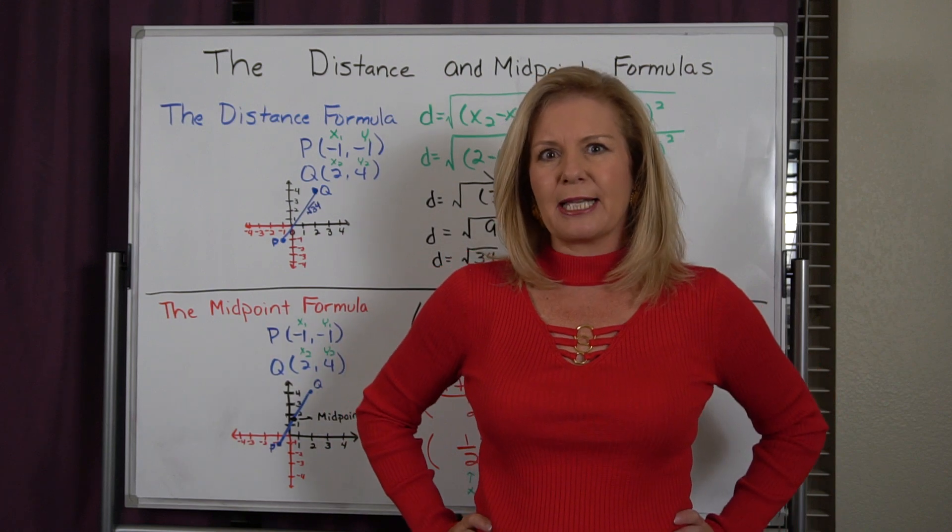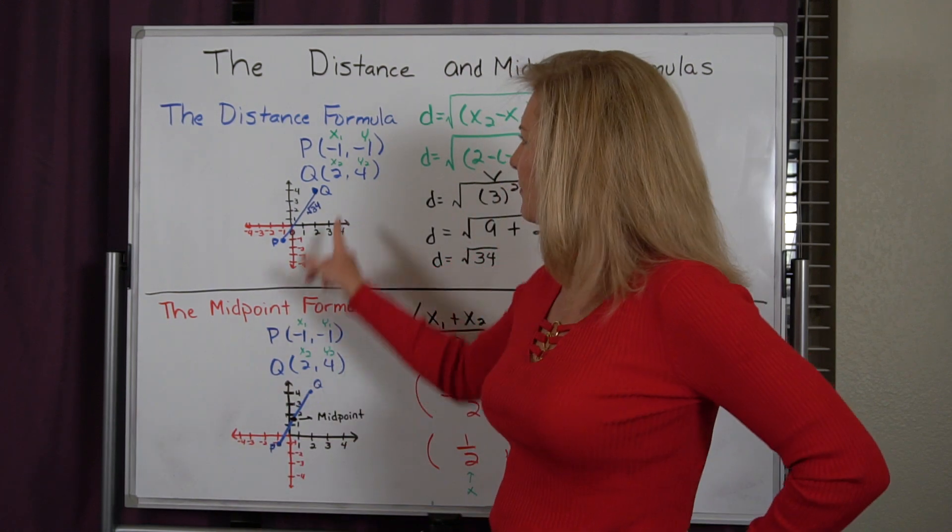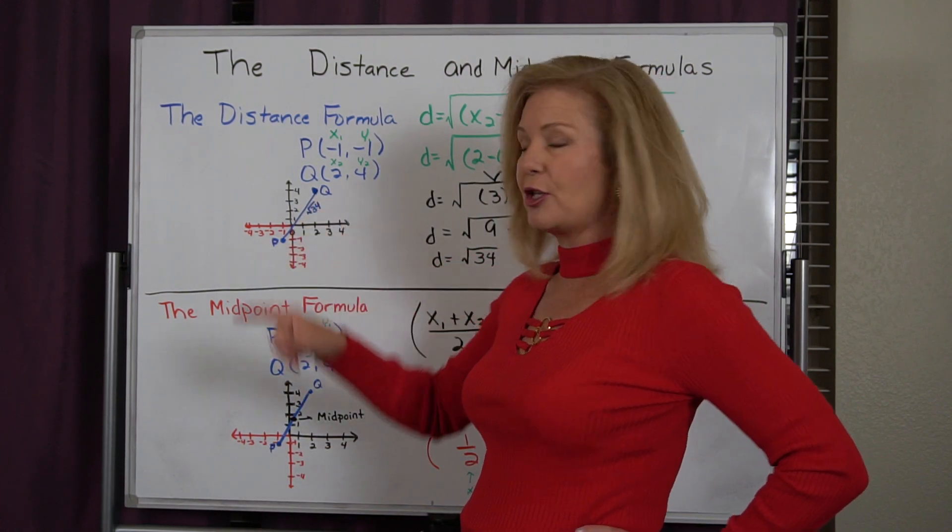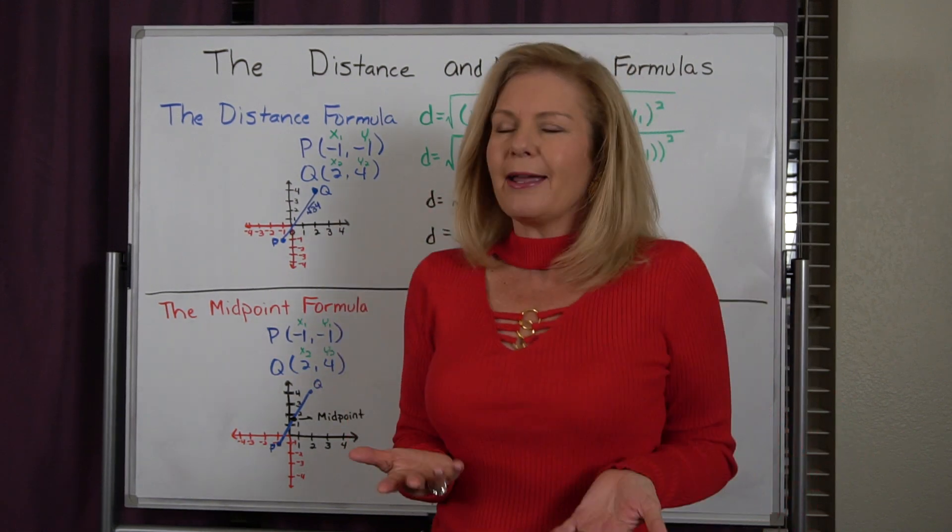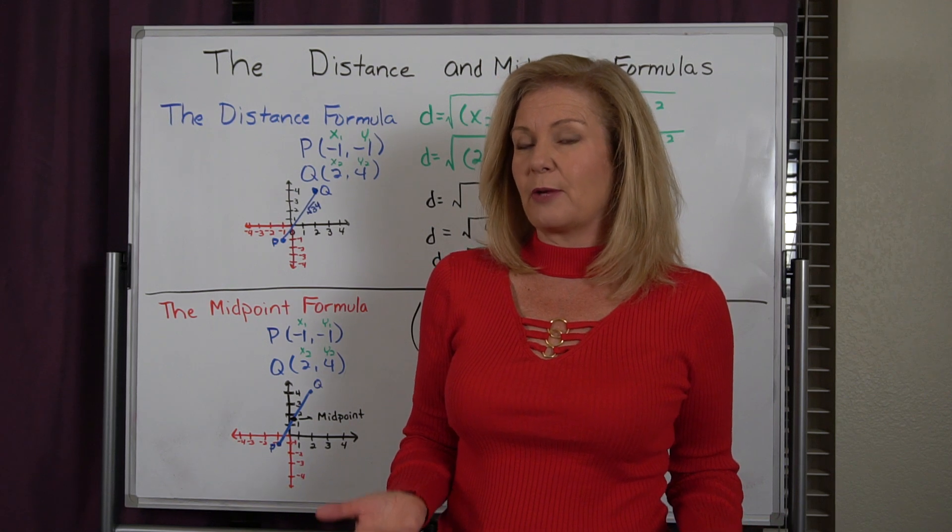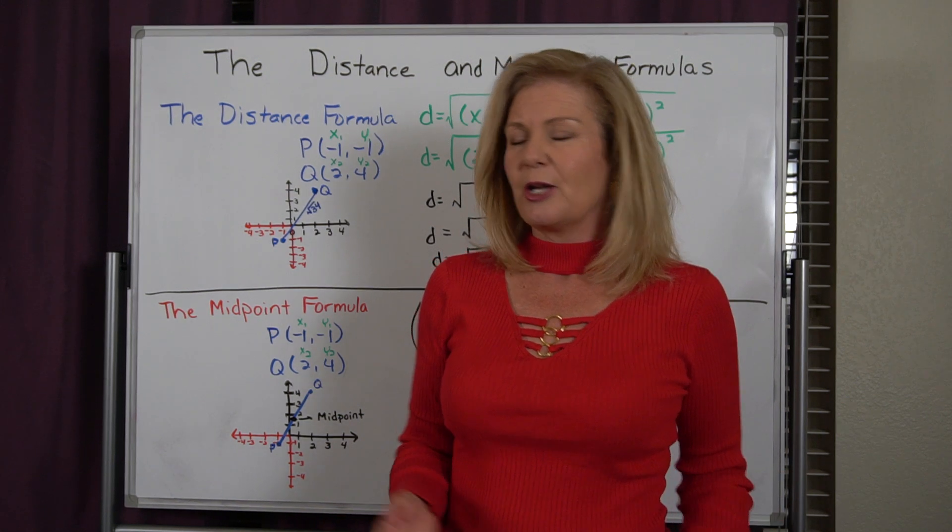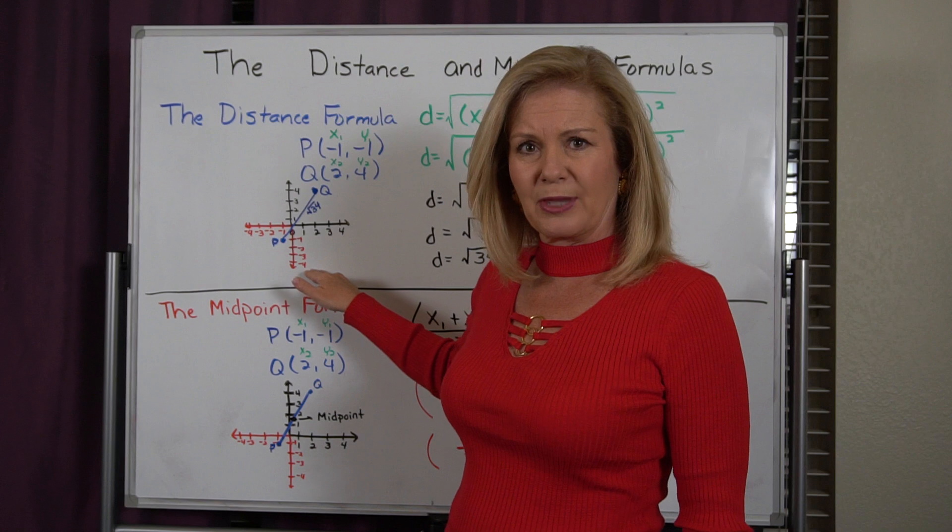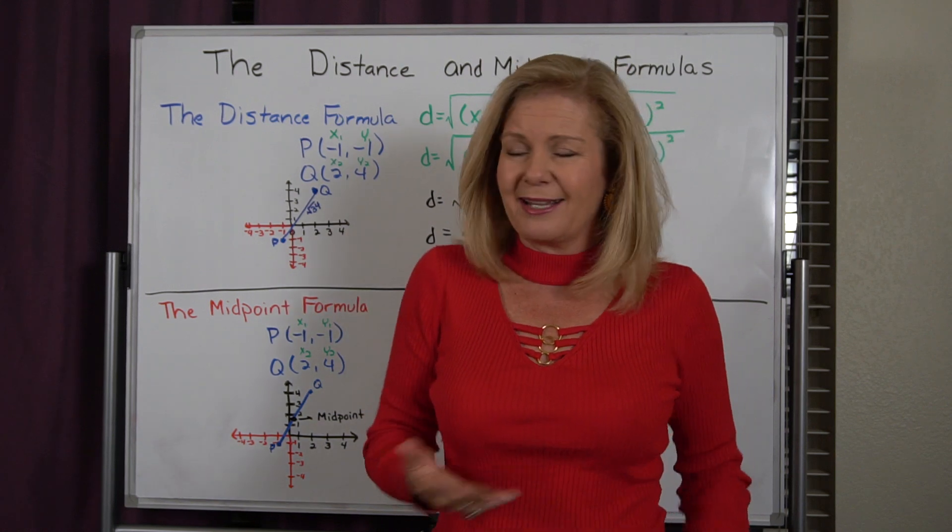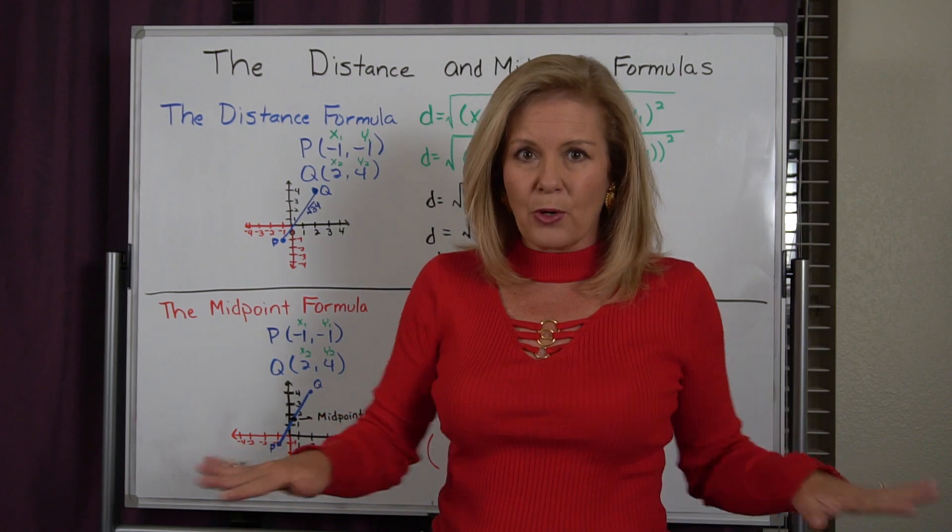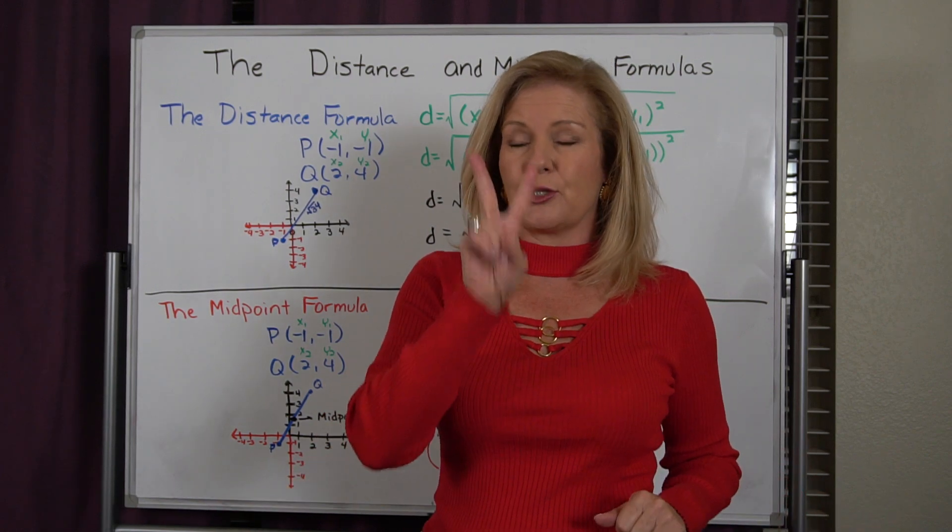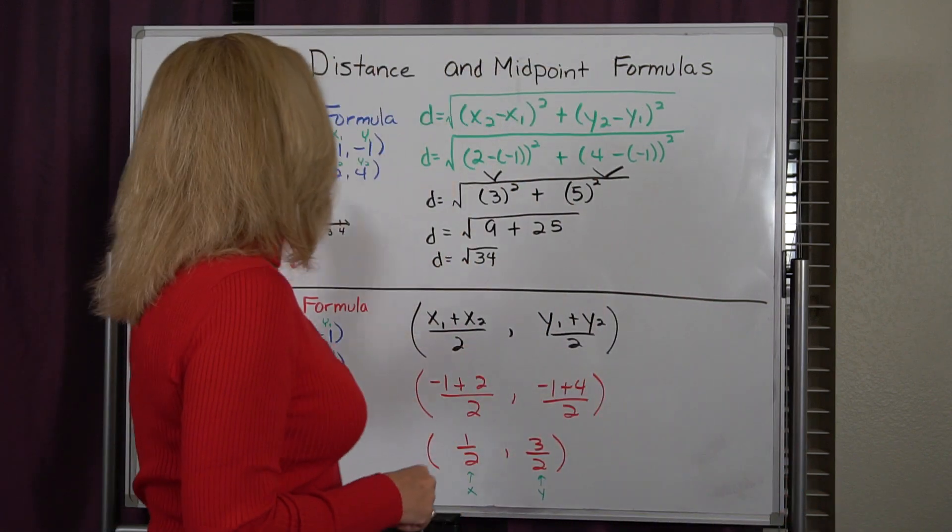And we need to calculate the length of the line that goes from P to Q without drawing it. Well, drawing it would be helpful because we could probably make a right triangle and we could use Pythagorean theorem. But no one really wants to go through the hassle of drawing that coordinate plane because it takes a long time. So mathematicians figured out this formula that you could use if you were given two points, and it's called the distance formula.